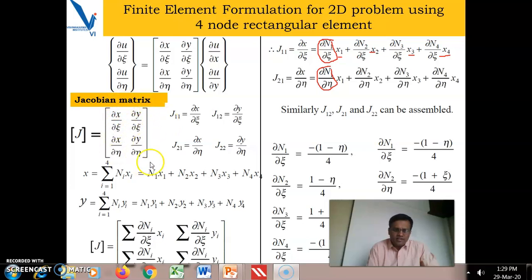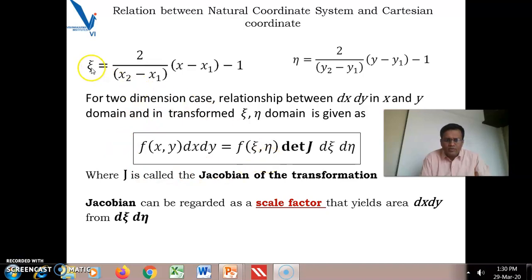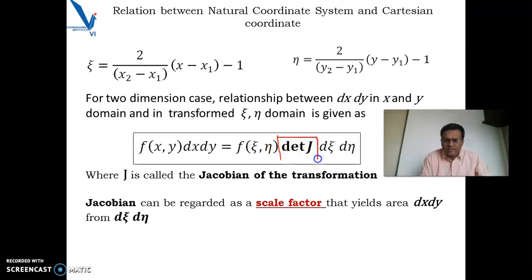After substituting the mapped element xy coordinates, you obtain all coefficients of the Jacobian matrix. Once you have the Jacobian matrix, you can establish the relationship between xy and ζη coordinates, transforming ∫f(x,y)dx dy to ∫f(ζ,η)·det(J)·dζ dη. The Jacobian is a scale factor: whenever switching from xy coordinates to ζη coordinates, that transformation is governed by the Jacobian matrix.